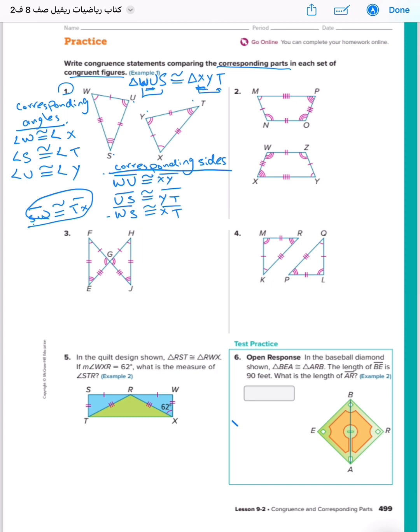This is question number two, same. At the beginning, we will write MN - it's easy to write with one line, two lines, OP - it's congruent to YZWX. Now write corresponding angles one by one.